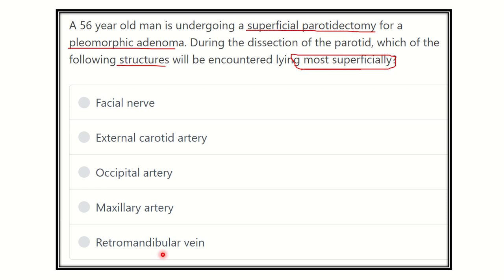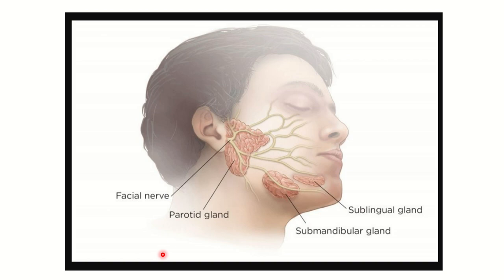In this picture we can see the parotid gland, submandibular gland, and sublingual gland. Within the parotid gland substance we can see a nerve that gives rise to five terminal branches — this nerve is the facial nerve. There is a significant risk of injury to the facial nerve during superficial parotidectomy.